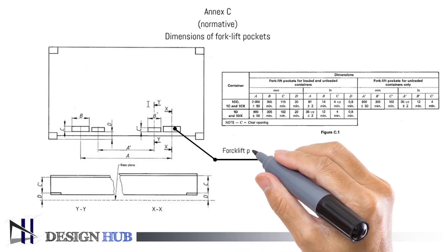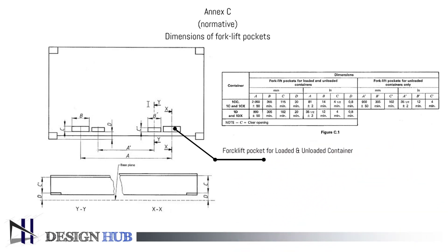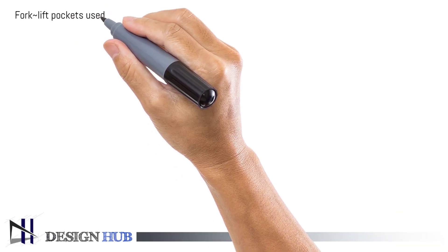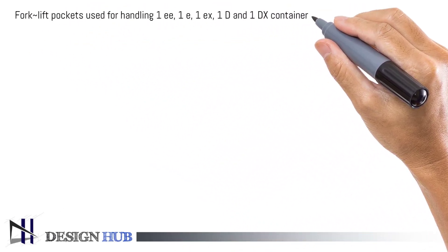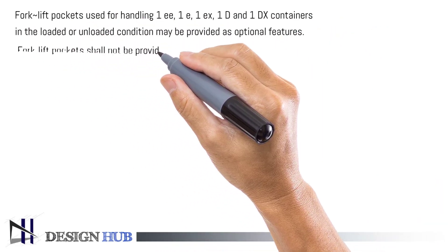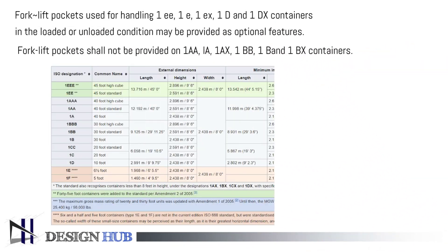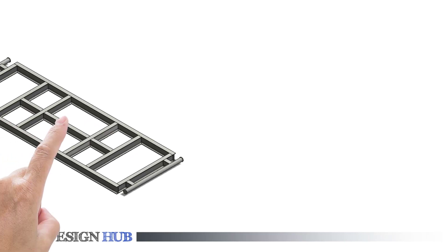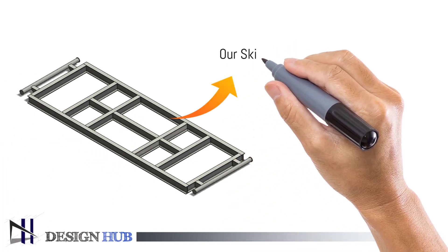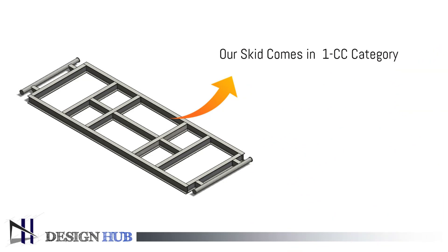Annexure C is used for loaded and unloaded containers, and for empty weight only. Forklift pockets are used only for categories 1A, 1AA, 1AAX, 1BB, 1BBX — forklift pockets shall not be provided for other categories. Our skid comes in the 1CC category, so we will take dimensions through Annexure C and make a sketch in our model.